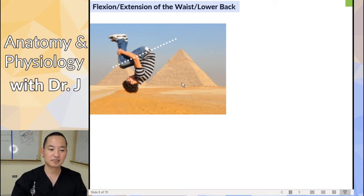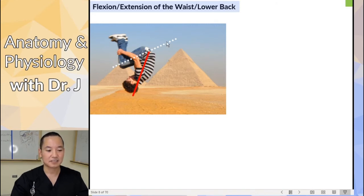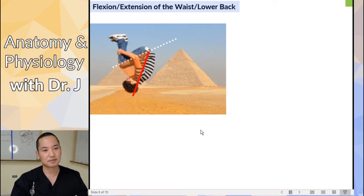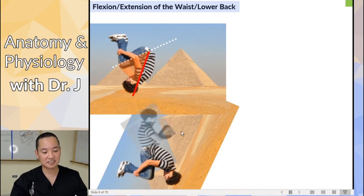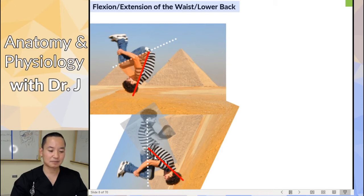Same picture. If his legs were aligned with his back — back up here, legs down here — what happened to the angle? His upper torso went from 180 down to even less than 90 degrees; it's a very small angle. So he is in the flexed position at his waist. It's very important to pinpoint where the joint you're talking about is. If he was in anatomical position, his upper back and legs would be aligned in the same plane, but he bent forward — that's why his lower back and waist are in a flexed position.